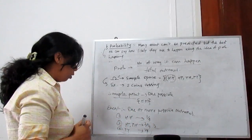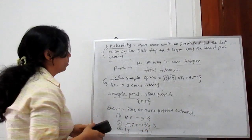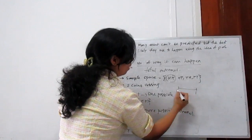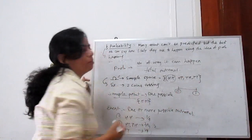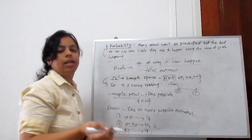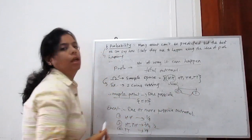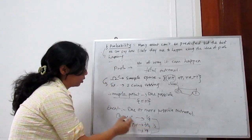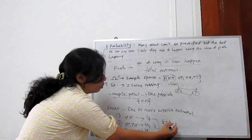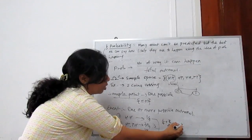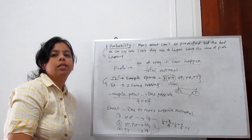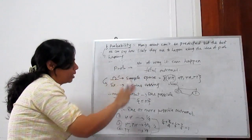Another fact about probability is that probability always lies between 0 and 1. Either it is 0 or maximum is 1. If something is not happening, its probability is 0; happening completely is 1; and all probabilities lie between 0 and 1. For example, if we add all probabilities for this sample space, the sum always gives 1 — because 4 by 4 is 1. So the sum of all probability for that sample space is always 1.